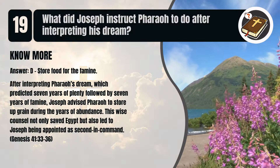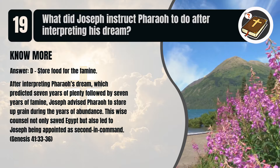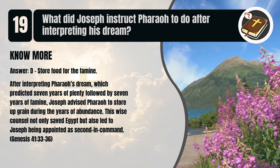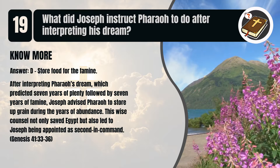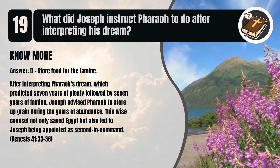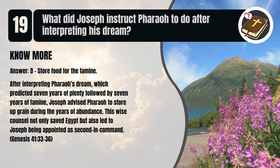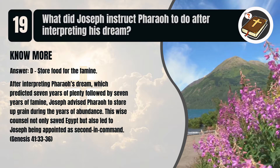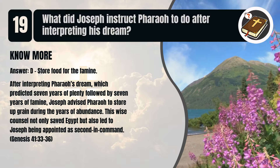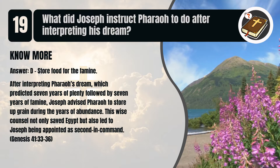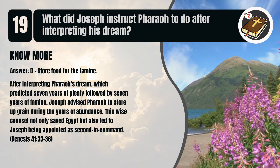After interpreting Pharaoh's dream, which predicted seven years of plenty followed by seven years of famine, Joseph advised Pharaoh to store grain during the years of abundance. This wise counsel not only saved Egypt, but also led to Joseph being appointed as second in command. Genesis chapter 41 verses 33 to 36.